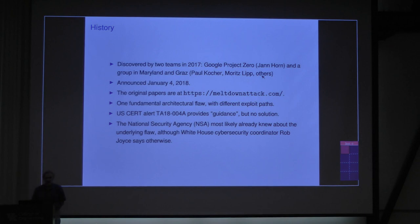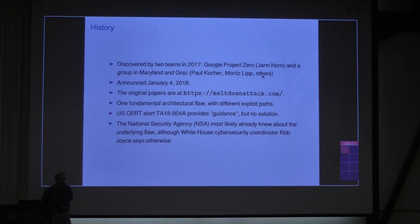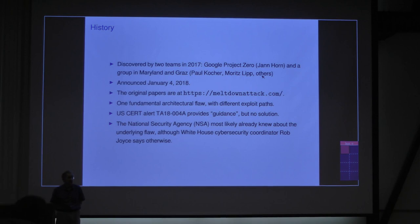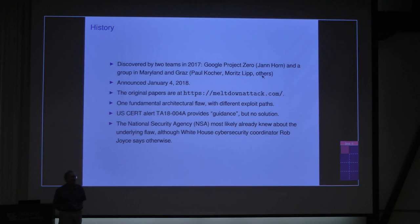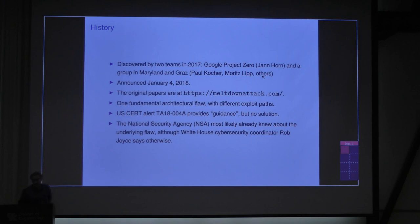This was discovered in the middle of 2017. Various projects discovered it, and it was announced just this last week, although it was made available to vendors back in November so that people can start fixing things. This is standard practice if you discover a terrible security problem — you let the vendors know, you're given a chance to fix it, and then when you can't keep the lid on the box any longer, you announce it. There are some original papers you can get from that website, and I've got copies of them myself — that's how I learned about this.